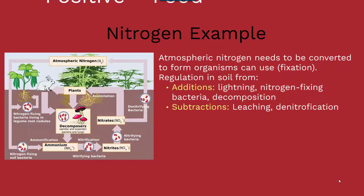When looking at nitrogen in a cycle, there can be contributions from natural sources such as lightning, nitrogen-fixing bacteria, and the process of decomposition, or there can be subtractions such as leaching, the use of that nitrogen, as well as denitrification by denitrifying bacteria. There are natural elements that contribute to the movement of that particular resource within that ecosystem.